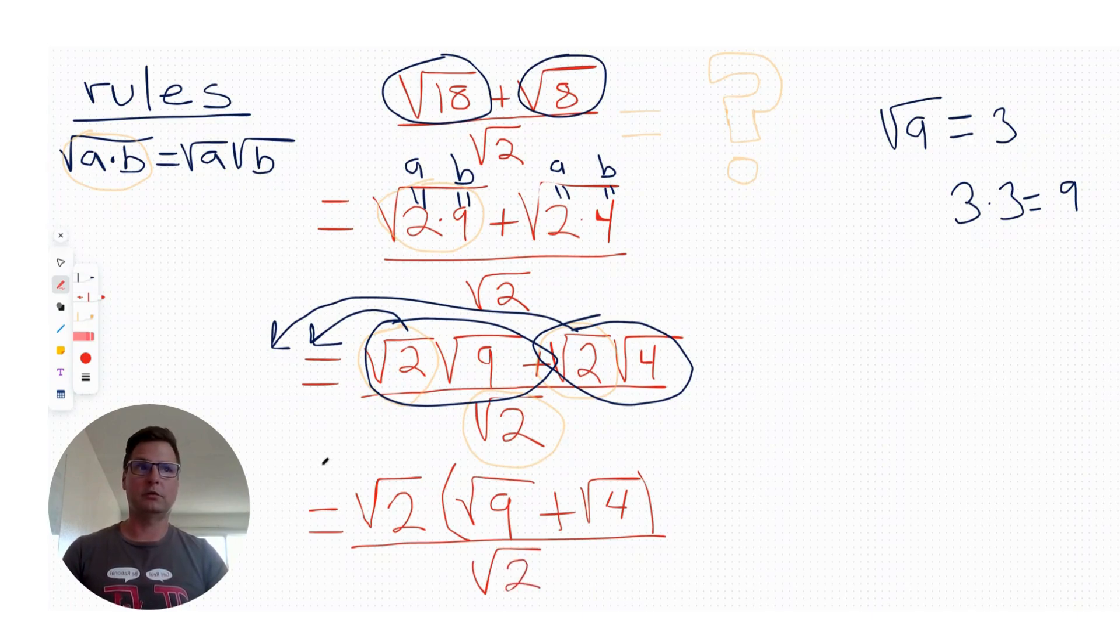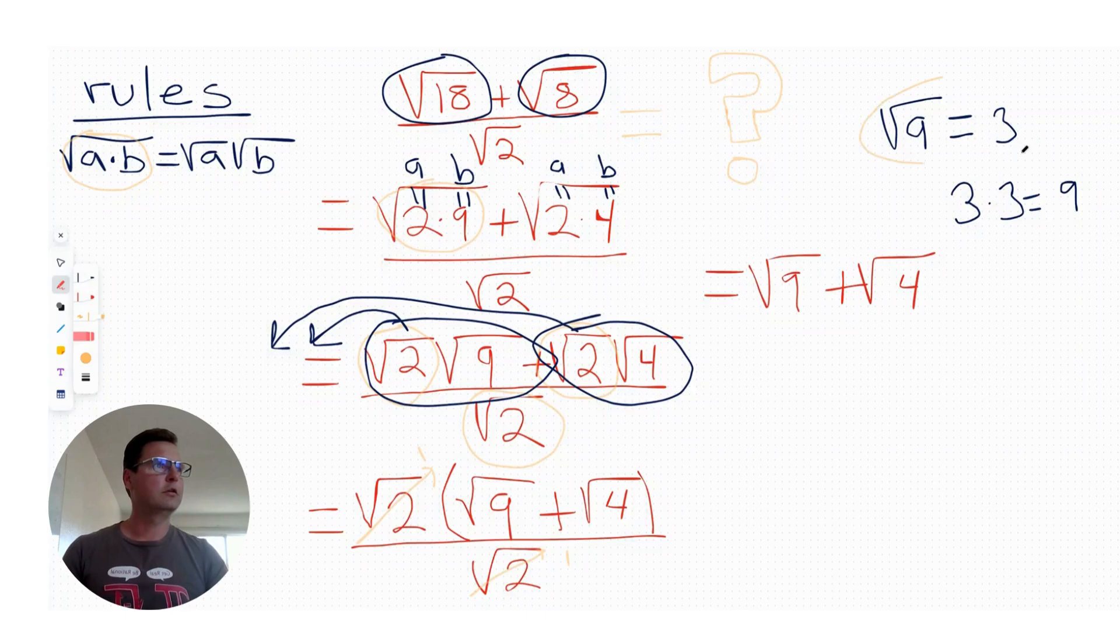Do you guys see it? You guessed it. They cancel out now. So square root of 2 divided by square root of 2 becomes 1. Now we're left with square root of 9 plus square root of 4. And remember this one here that we know how to do because that's an easy square root. All right. What do we get? Square root of 9 is 3. And then we have another one that's really easy that we already know over here. Square root of 4 equals 2. 3 plus 2 equals 5.